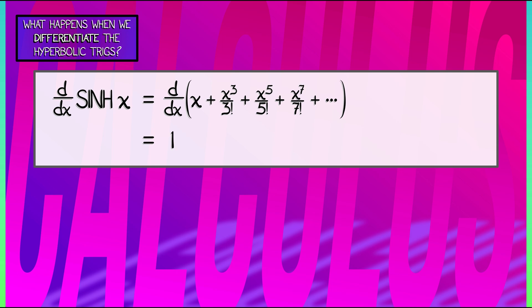The derivative of x cubed over 3 factorial, we did this when we were coming up with the series for sine and cosine. That is going to be x squared over 2 factorial.